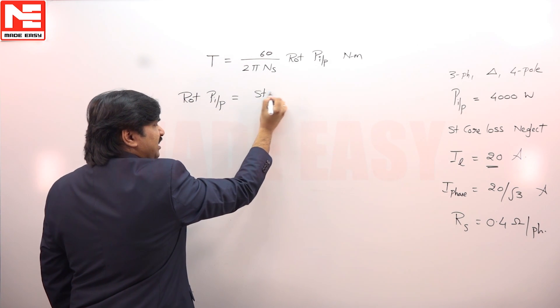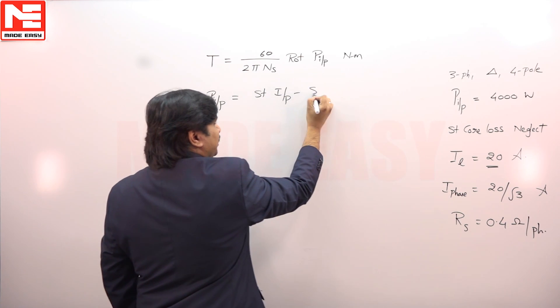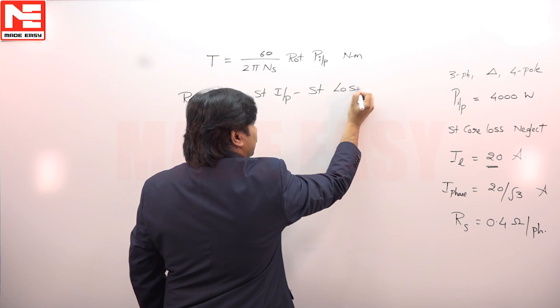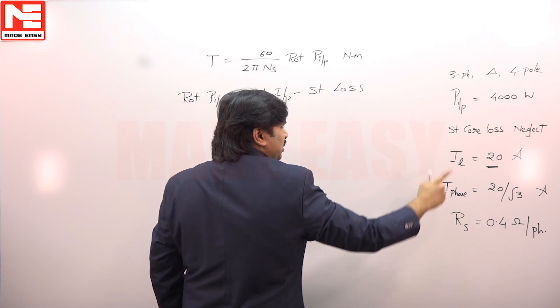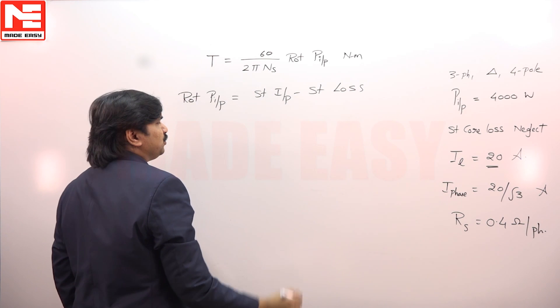Rotor power input is stator input minus stator loss. Stator loss contains two things: one is stator core loss, the other one is stator copper loss. Already given in the question, stator core loss is neglected.